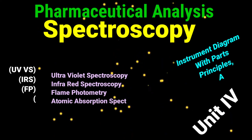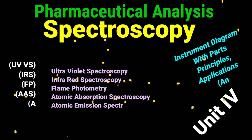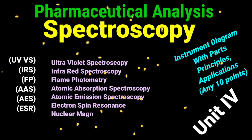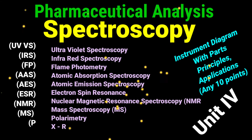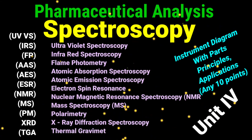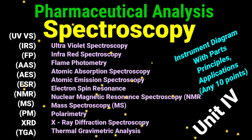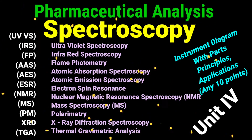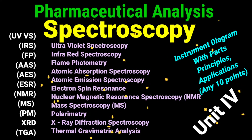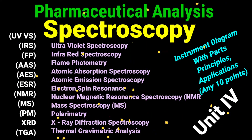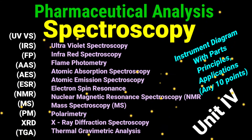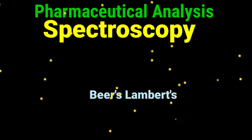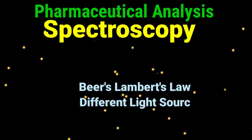In Unit 4, the instruments covered include UV-visible spectrophotometry, infrared spectrophotometry, flame photometry, atomic absorption spectrophotometry, atomic emission spectroscopy, nuclear magnetic resonance spectroscopy, electron spin resonance, mass spectroscopy, polarimetry, X-ray diffraction spectrophotometry, and thermogravimetric analysis. For all instruments, neat diagrams with parts, short principles, and 5 to 10 applications are required.